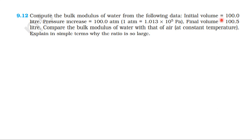Initial volume is 100 litres. Pressure increases by 100 atm, where 1 atmospheric pressure equals 1.013 × 10⁵ Pascal. Final volume is 100.5 litres. Compare the bulk modulus of water with that of air at constant temperature. Explain in simple terms why the ratio is so large.